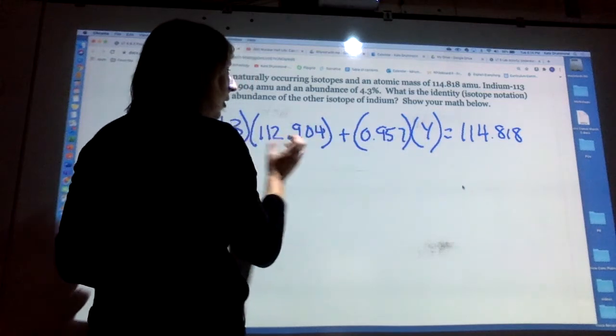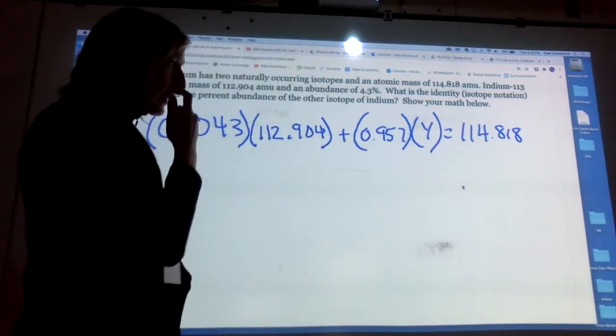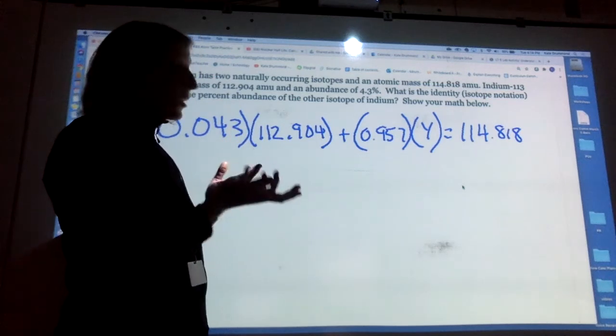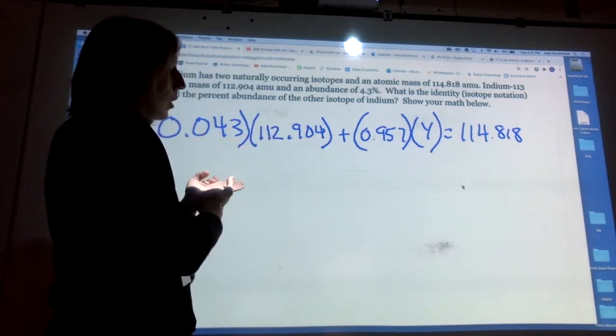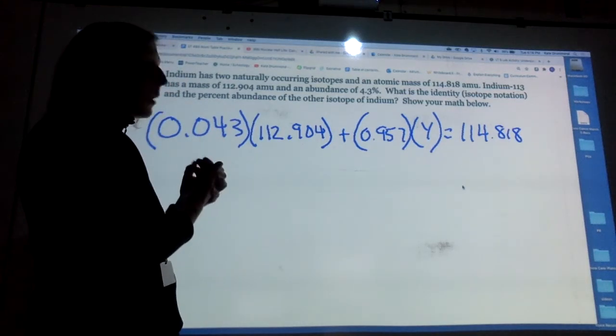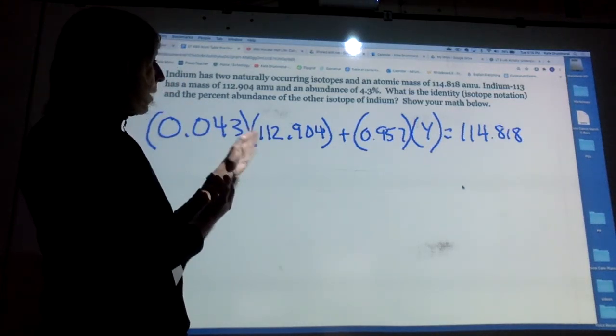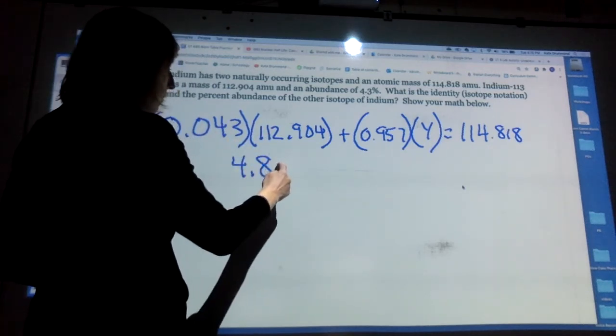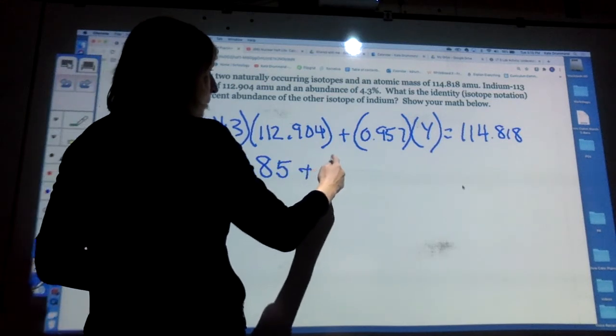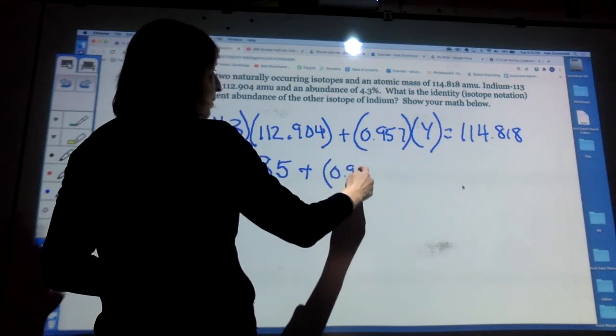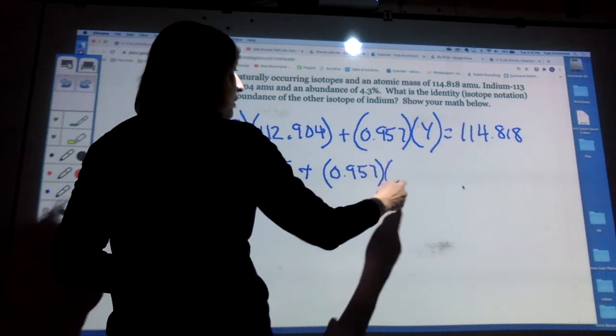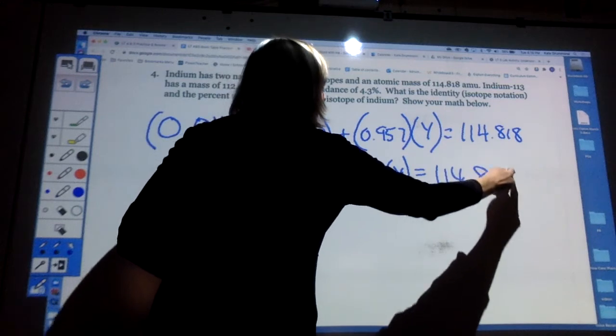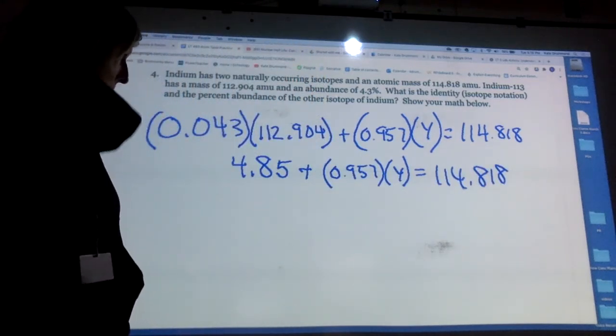So I'm going to combine like terms. I have these two numbers that I can multiply together, they don't have any variables in them, so I can simplify by multiplying them. So when I multiply I get 4.85, and then that's going to be plus 0.957 times y, and that's going to be equal to 114.818. So I've simplified the problem even more.